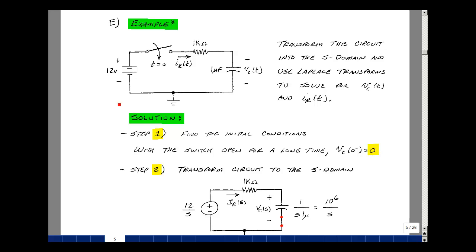This is a circuit that had a 12-volt source, a single-pole single-throw switch that closes at t equals 0, and a resistor and a capacitor.